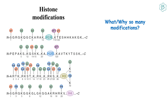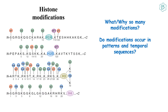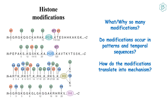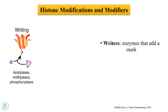Why and what are these modifications? Do these modifications occur in any pattern or temporal sequences? How do these modifications translate into mechanism — is there a histone code? Histone modifications are marks written to the histone by writer enzymes that add a mark to the histone in terminal tails.